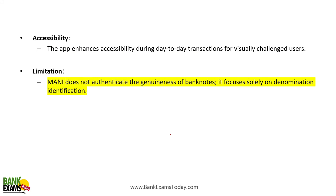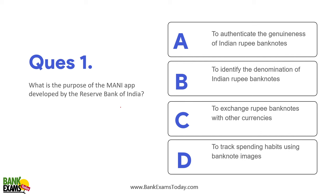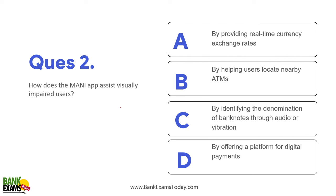The MANI app enhances accessibility during day-to-day transactions for visually challenged users. Its limitation is that it does not authenticate the genuineness of banknotes — it is solely focused on identifying the denomination of the note. The app assists visually impaired users by identifying the denomination through audio or vibrations.